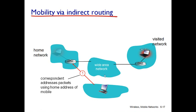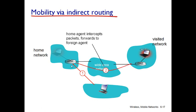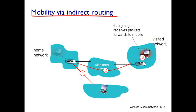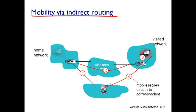Now we will talk about indirect routing. The correspondent wants to contact our user and will call the home network, because they don't know whether the user is in the home network or some foreign network. In our case, the user already left the home network and is in the visited or foreign network. The home agent knows the presence of the mobile node in the foreign network, so it contacts the foreign agent and sends the packet by means of encapsulation to the foreign agent. The foreign agent decapsulates and transmits that packet to the mobile node.